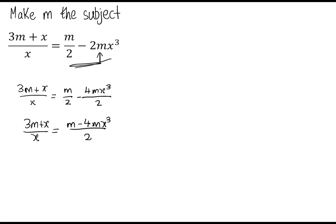If we multiply both sides by 2 and x, we're going to get 3m plus x all multiplied by 2 on this side. And on the right hand side, we're going to have x multiplied by both the terms, so m x minus 4m x to the 4. So if we expand that bracket, we have 6m plus 2x equals m x minus 4m x to the 4.